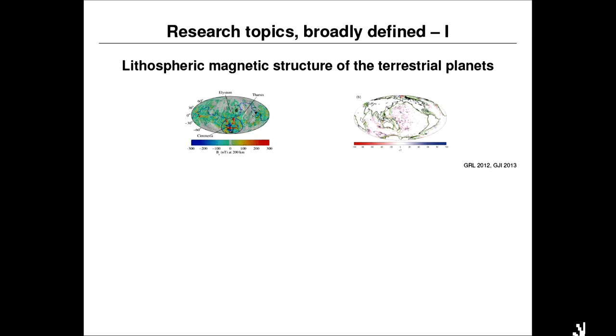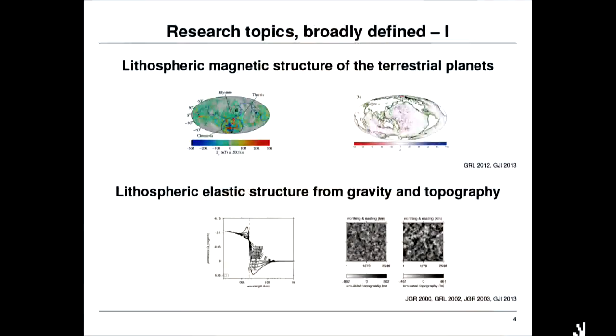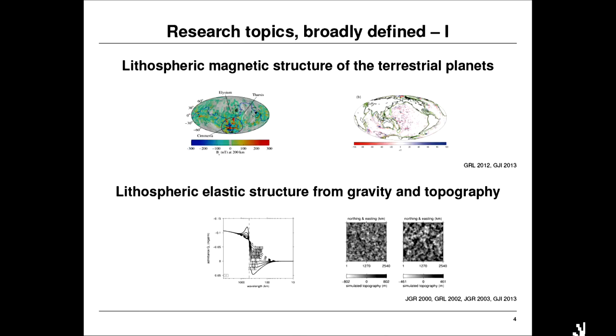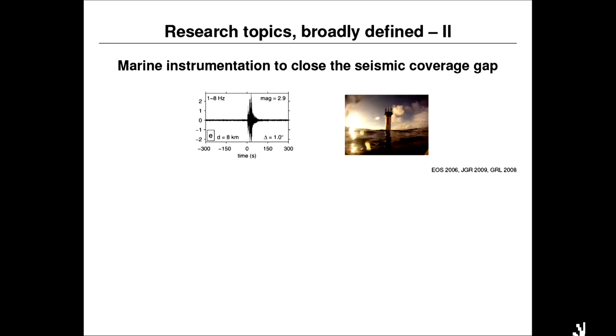When thinking about what to present for these 30 minutes, I made a quick list of my main research interests. This starts with lithospheric magnetic structure of the terrestrial planets — we've done work on Mars, looked at the terrestrial lithospheric magnetic field, and plan to look at other planets. I've also been interested in lithospheric elastic structure derivable from topography and gravity, developing statistical and inverse modeling techniques to extract the elastic rheology of the shallow lithosphere.